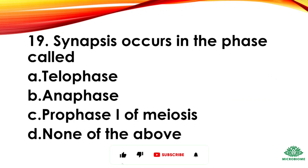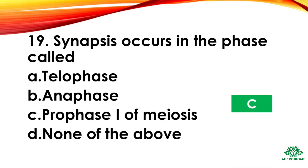Question 19: Synapsis occurs in the phase called — options: telophase, anaphase, prophase I of meiosis, none of the above. The right answer: option C, prophase I of meiosis.